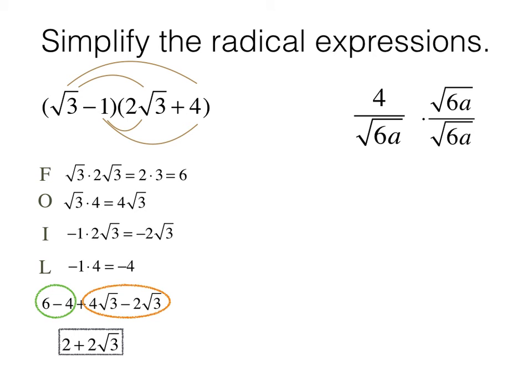My numerator is 4 root 6a. My denominator is 6a. And I can simplify this fraction by dividing the 4 in the numerator and the 6 in the denominator by 2. So this becomes 2 root 6a over 3a.